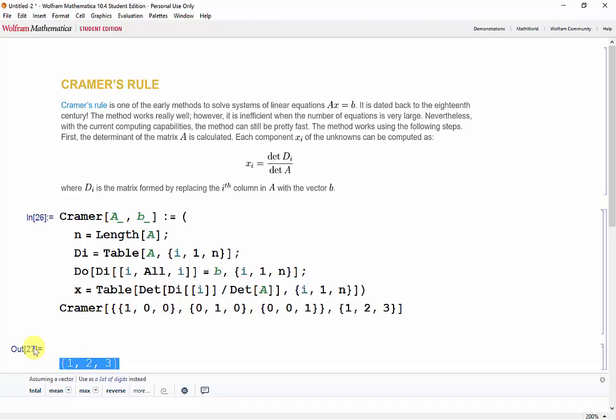It's important to note that the function we defined here doesn't work when the determinant of A is 0. So we can improve it by checking if the determinant of A is 0, printing an error message if it is, and then proceeding if it isn't. In the next part of the tutorial, we'll take a look at programming a function that performs Gauss elimination.